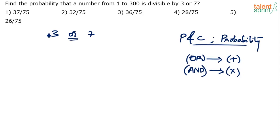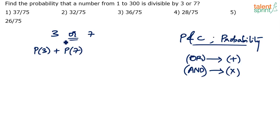The point I'm making is: find the probability that the number is divisible by 3, or it is divisible by 7. Basically, the probability that the number is divisible by 3, plus the probability that the number is divisible by 7 — two different cases, case 1 plus case 2. If it says divisible by 3 and 7, then you go for multiplication. So here, we take up the probability separately: number divisible by 3, or number divisible by 7 — add the probabilities.